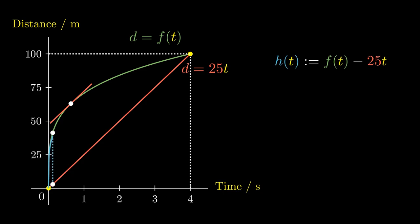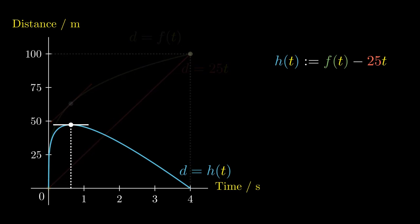We're going to notice something peculiar at this particular point. At the turning point of d equals h of t, we obtain the x-coordinate of the same point where the gradient of f of t equals the gradient of the red line. Is this a coincidence? We're going to use some crucial results in calculus to show that this is not a coincidence.